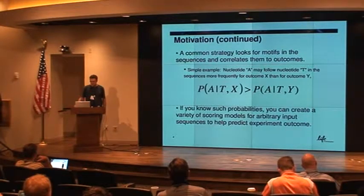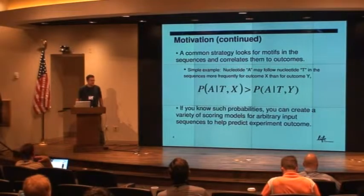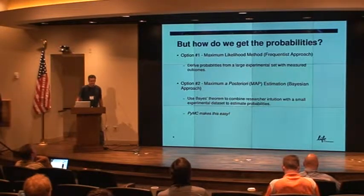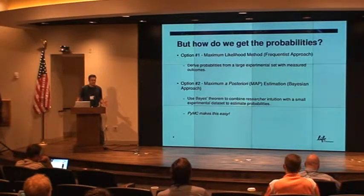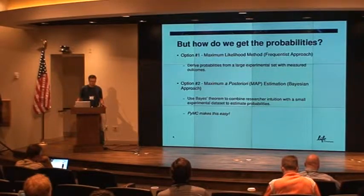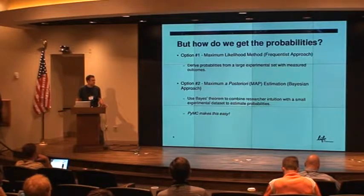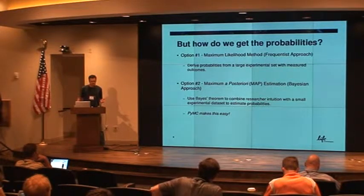So if you know these probabilities, you can create a variety of scoring models for arbitrary input sequences and predict experimental outcome to some degree. But how do we get the probabilities? If you have a lot of data, you can simply count the motifs and use them to derive probabilities — that's the frequentist approach. If you don't have a lot of data, and usually it's very expensive to get data, you can combine researcher intuition with a few data points using Bayesian inference and get probabilities to parametrize your scoring models with.